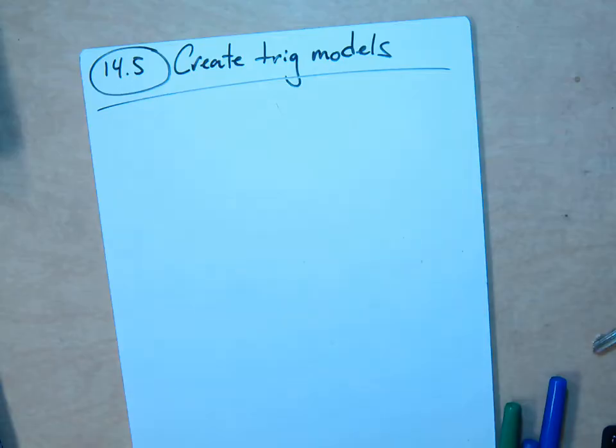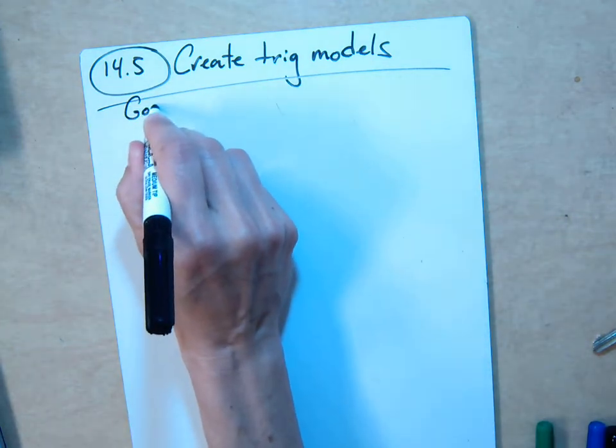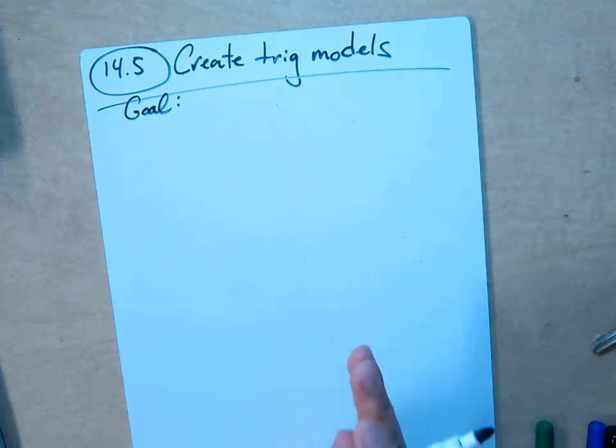Now we're going to create trig models. This is mathematical modeling, and we will be given either a graph or a story, and we have to come up with the model, not just use the model. The goal in order to do this is basically to find all the missing constants, and then you'll have the equation.